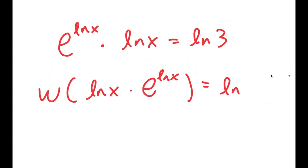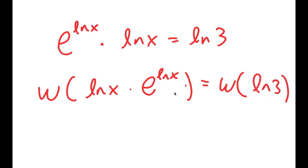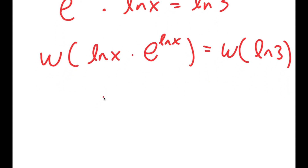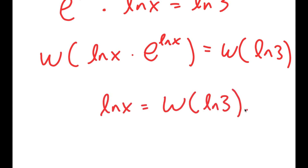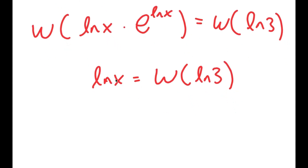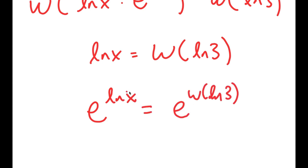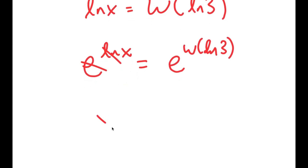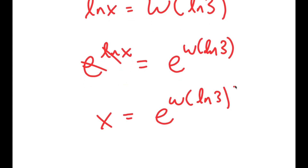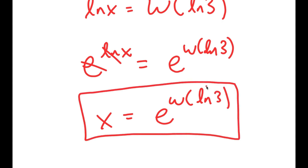Now I want to get rid of this ln, so I'm going to take e to the power of both sides. Since e to the power of ln cancels out, I get x is equal to e to the power of W of ln 3. So this is my final answer to this equation.